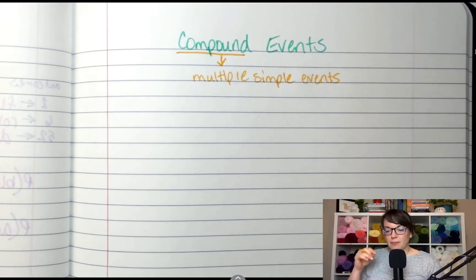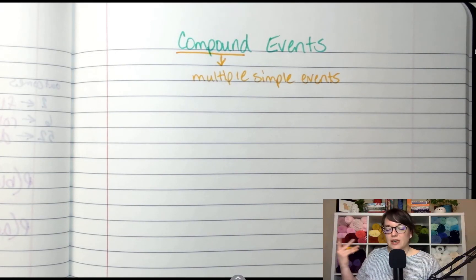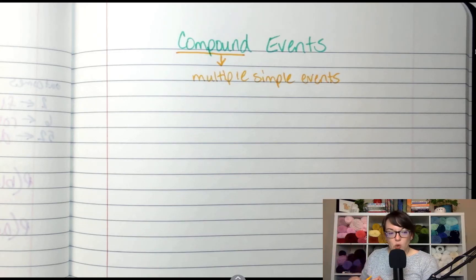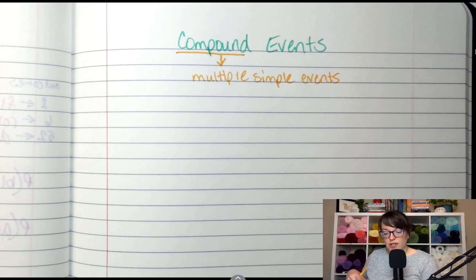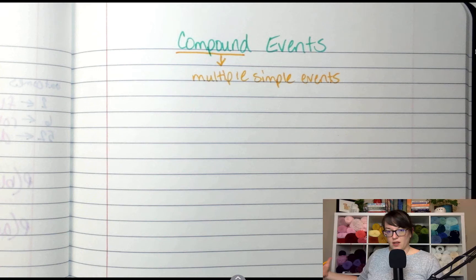Multiple simple events. So let's remember from last lesson with simple events, simple events are like flipping a coin, rolling a number cube, you spin a spinner, you draw a card. But if we wanted to do multiple things at once, we're going to look at how that affects the math.